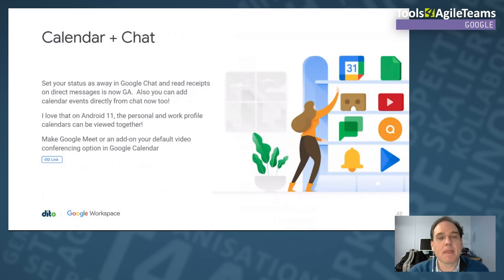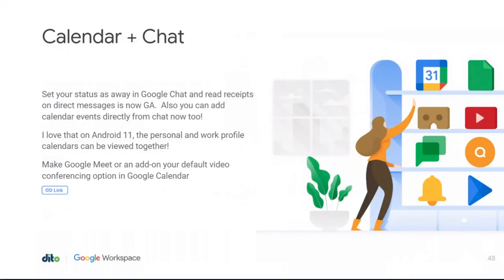In Google Chat, you can now set your status to Away, and read receipts are available for direct messages. You can tell Google to add a calendar event from Chat — if you mention a specific day, a highlighted link appears and you can add it to Calendar easily. On Android 11, you no longer need two separate calendars to view personal and work profile items — one calendar shows everything together, which is a great improvement for mobile device management users.